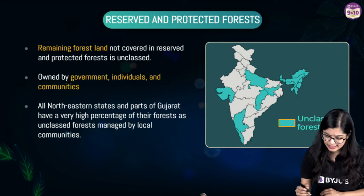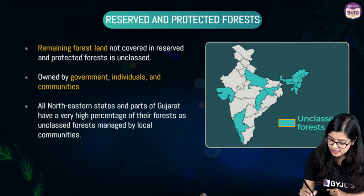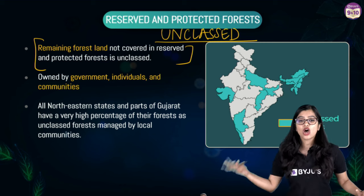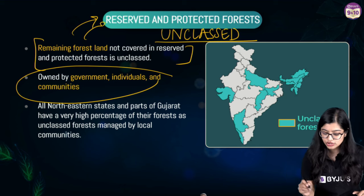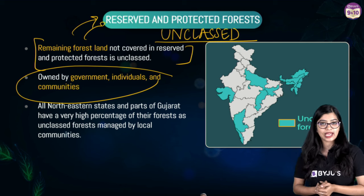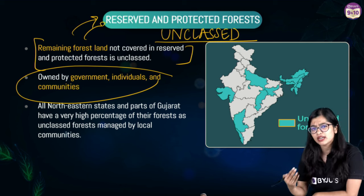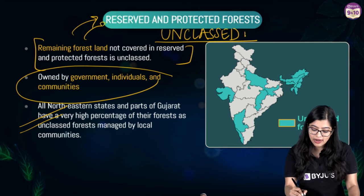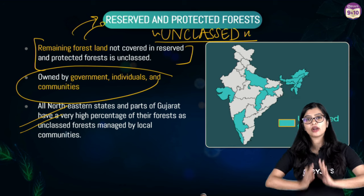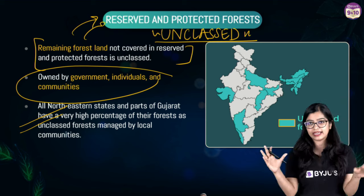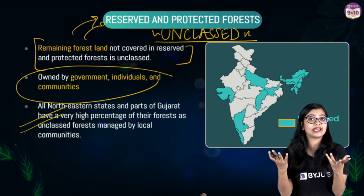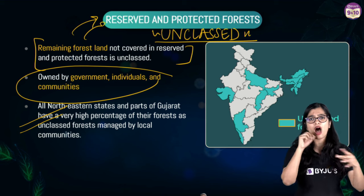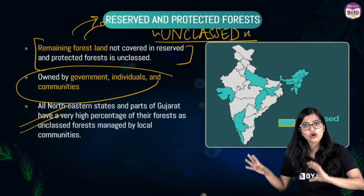Unclassed forests are the remaining forest land that does not come under the category of reserved or protected. They are not just owned by the government — individuals and communities also have rights over them, meaning village communities also have a right over this land. Especially in the north-eastern states and in parts of Gujarat, we find a large area of unclassed forests. On your board examination, you need to know the broad differences between these three categories — reserve, protected, and unclassed forests.